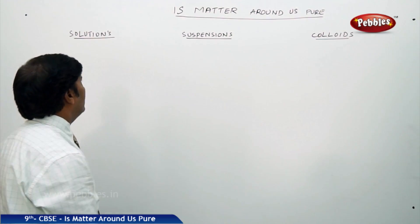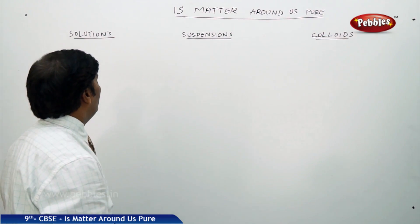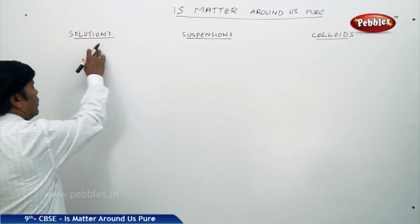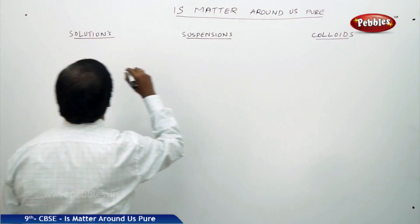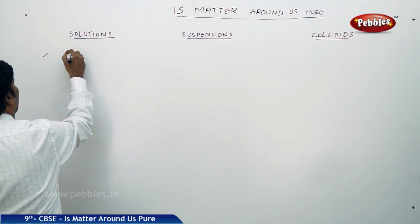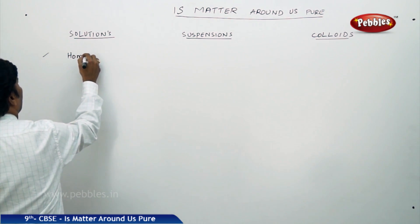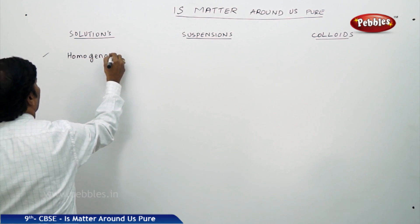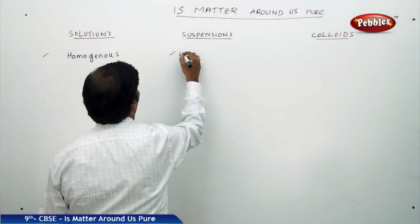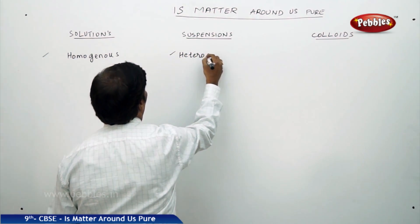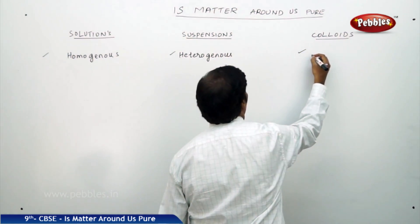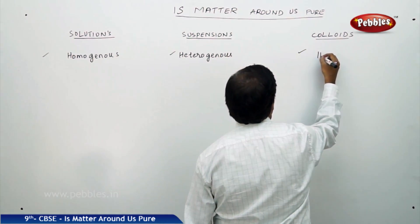Let us differentiate the three types of solutions: true solutions, suspensions, and colloids. True solutions are always homogeneous in nature. Suspensions are heterogeneous, and colloids are also heterogeneous.